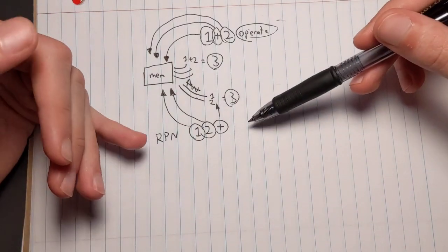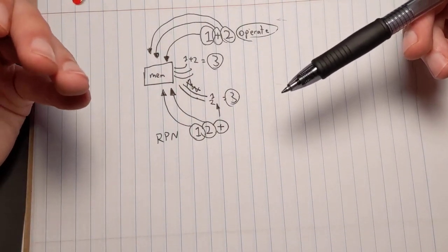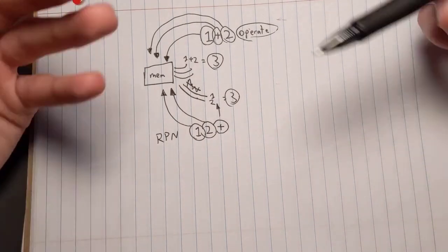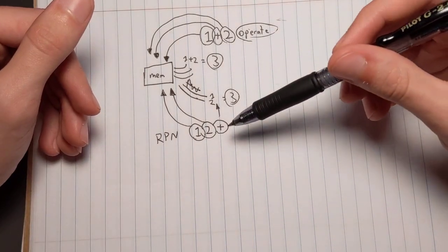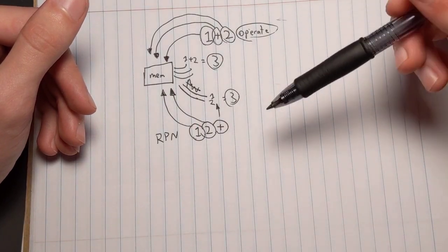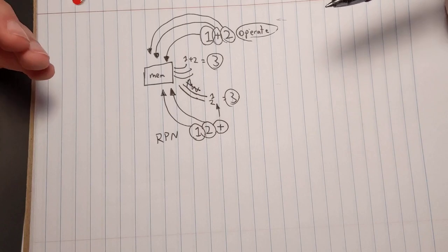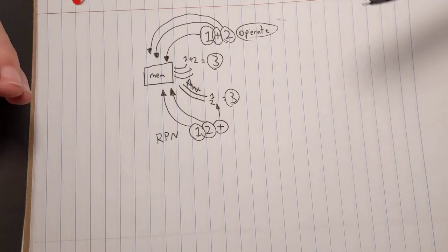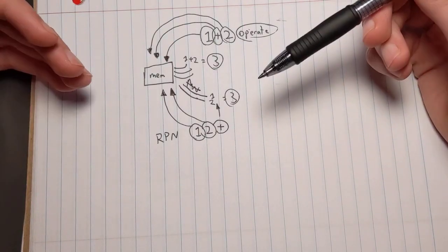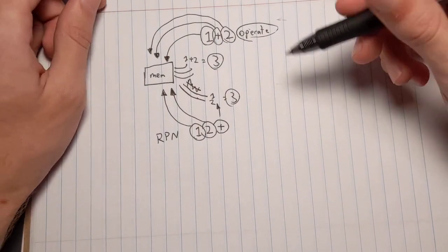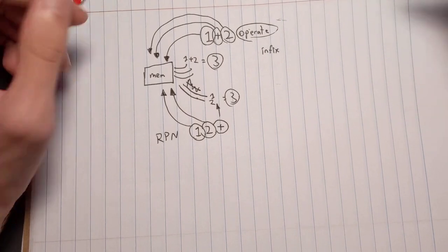In simple arithmetic this doesn't matter much, since computers are very fast. But if you're doing thousands or millions of calculations every second, that adds up after a while. Calculations could take minutes or hours longer than they should for very large computations. So RPN is generally more efficient than infix notation.